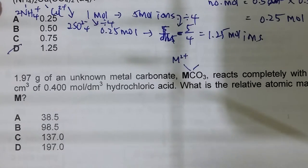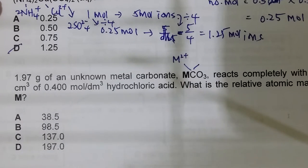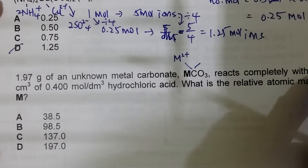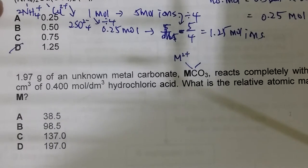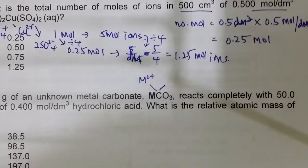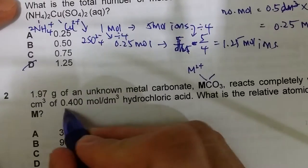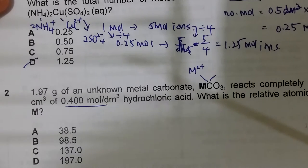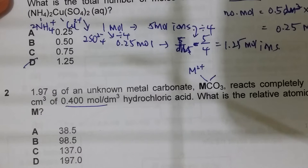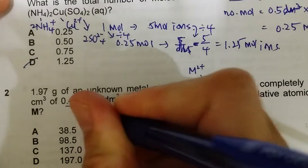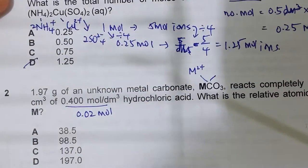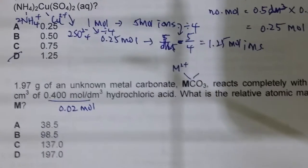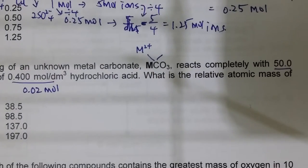The MCO₃ reacts completely with 50 cm³ of 0.4 mol/dm³ hydrochloric acid. From 50 cm³ and 0.4 mol/dm³, multiply those two numbers to get the number of moles of hydrochloric acid, which is 0.02 mol.